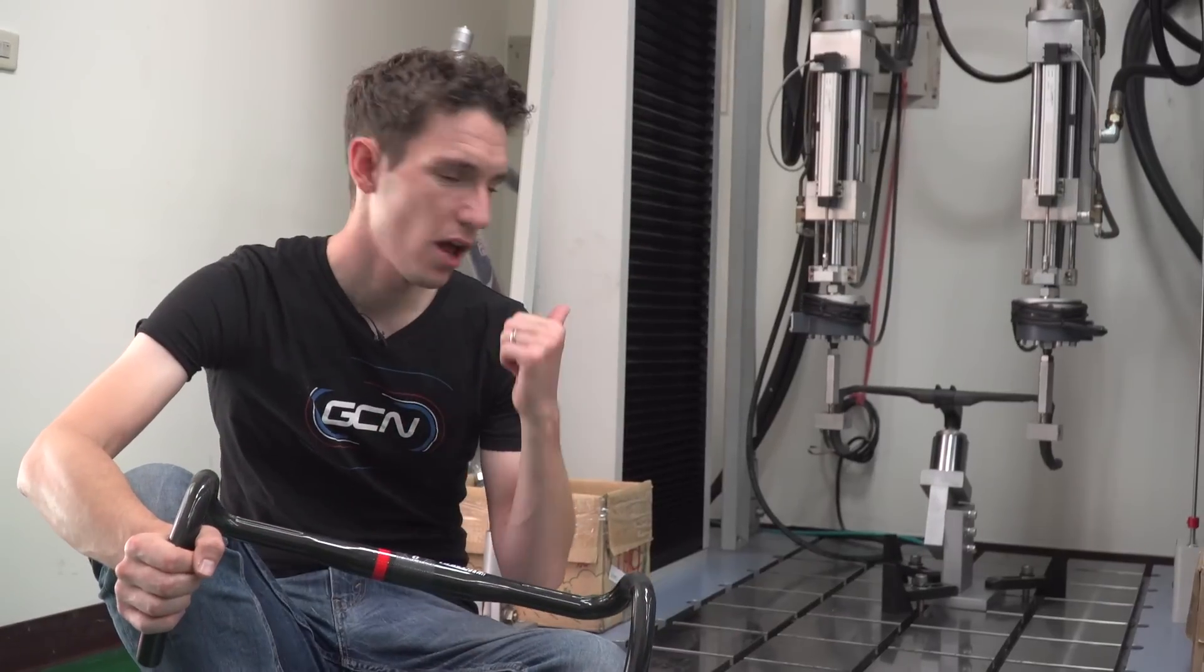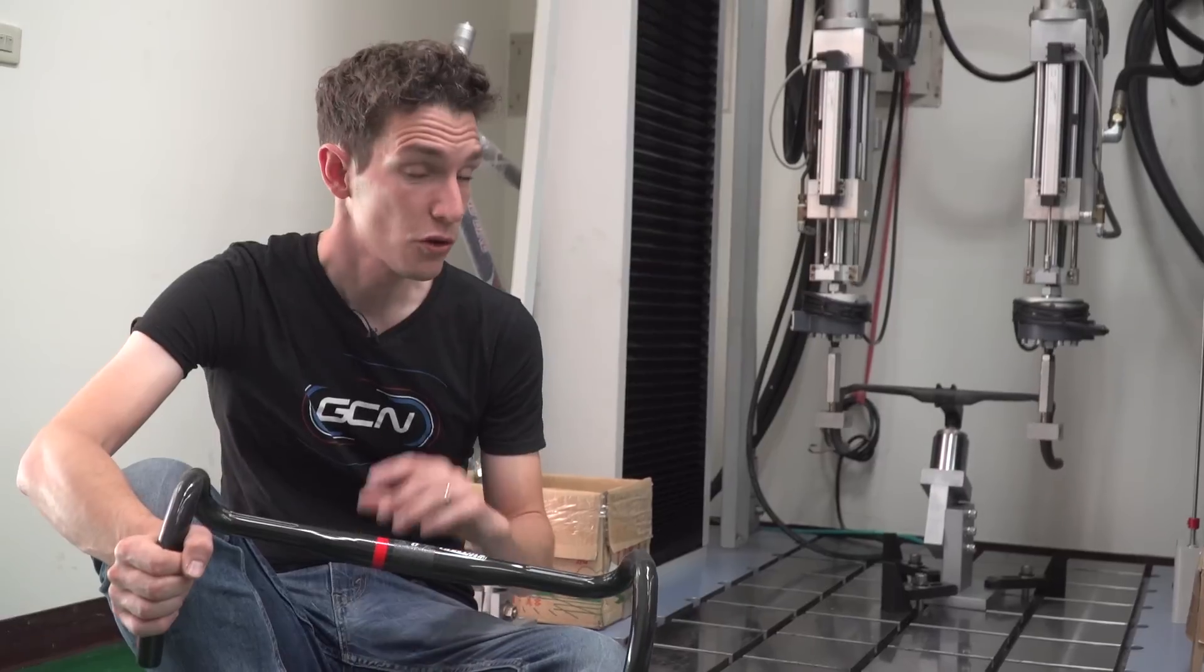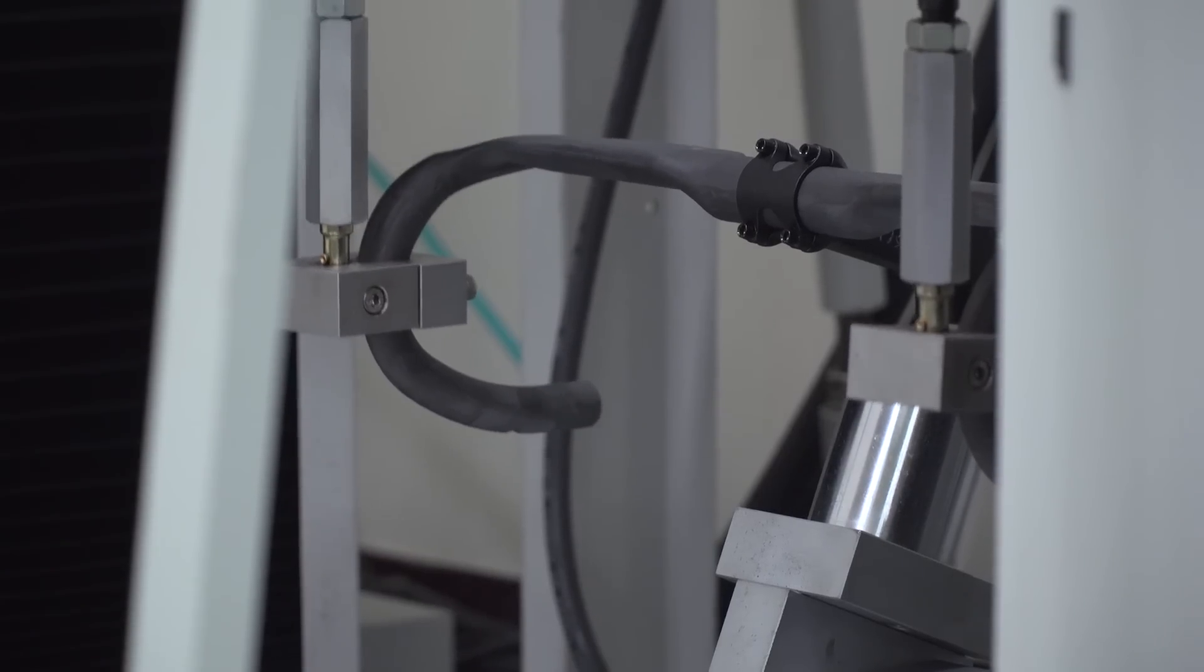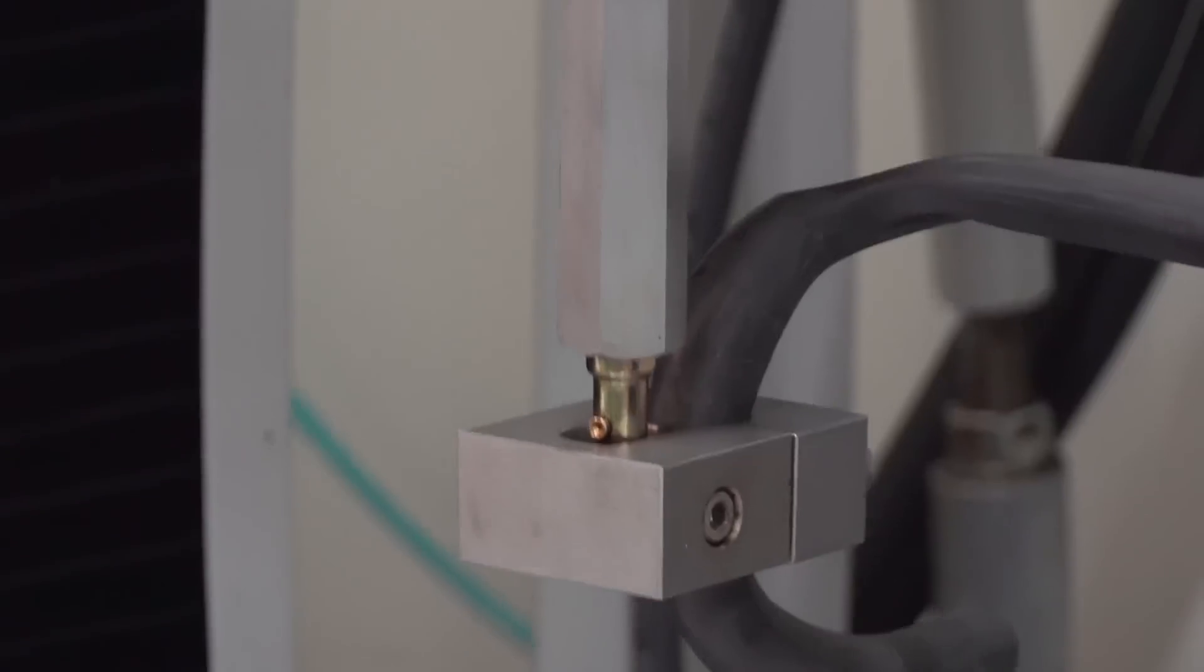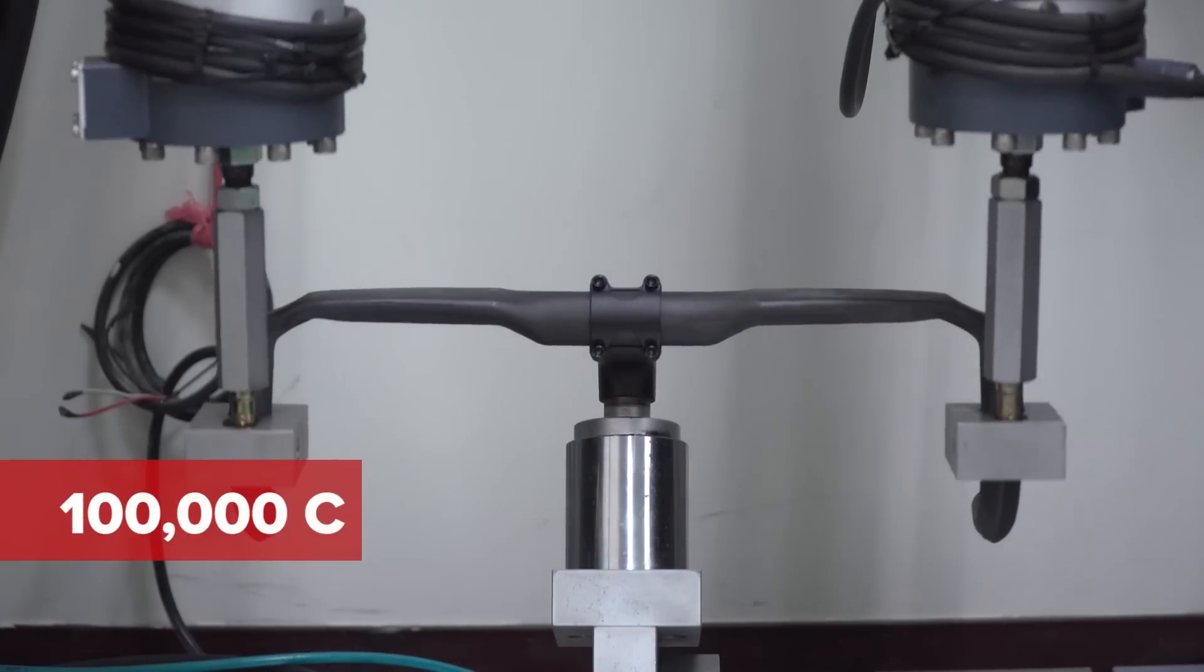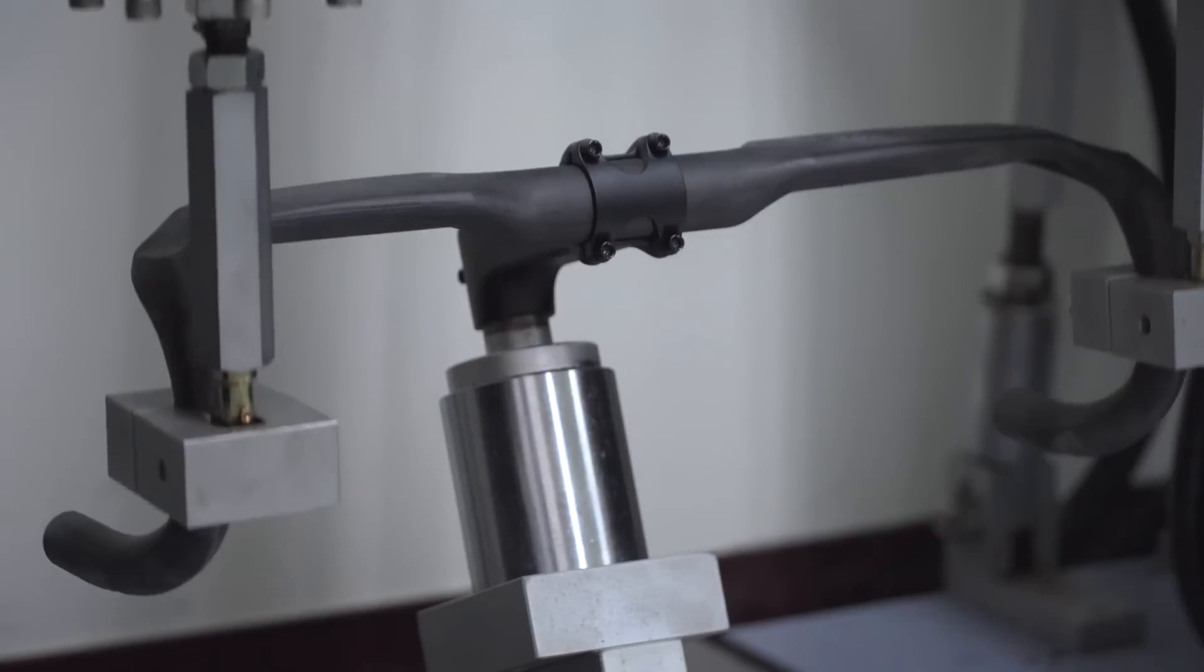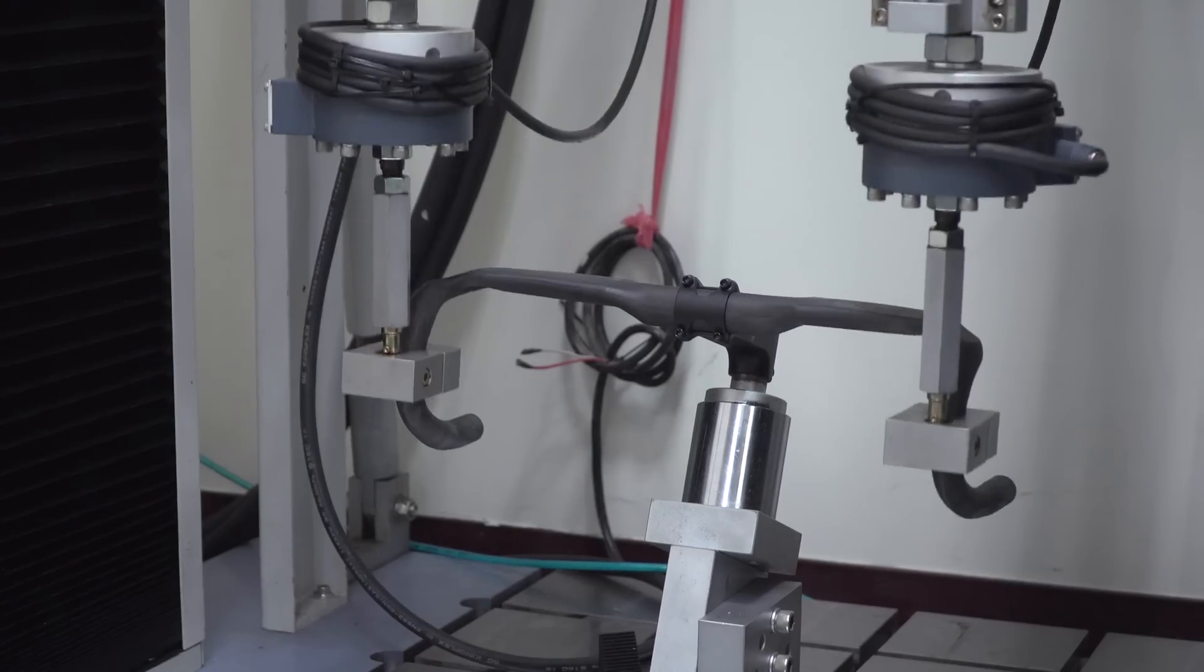First up, we've got fatigue testing. So how long a handlebar can stand up to extreme normal use. There is an international standard that all handlebars that are sold on the market need to withstand. It's called ISO 4210, since you asked. And it means that every handlebar has to go through 200,000 cycles. So 100,000 cycles of having a 280-newton force pressing down on it, immediately followed by another 100,000 cycles of a 400-newton force pushing and pulling on the handlebar like we can see here.